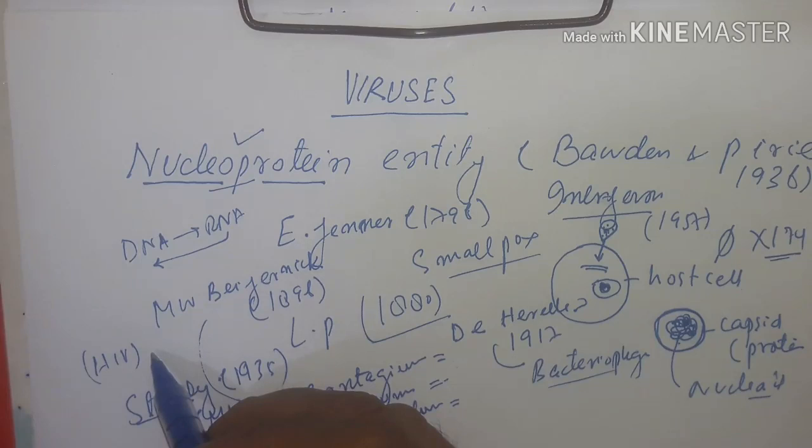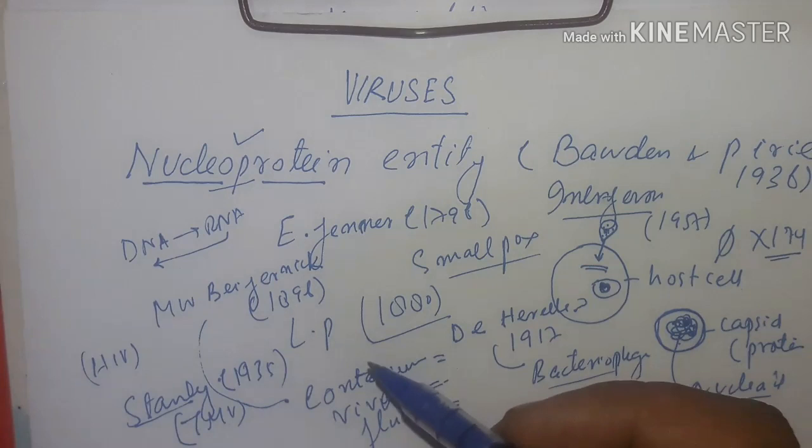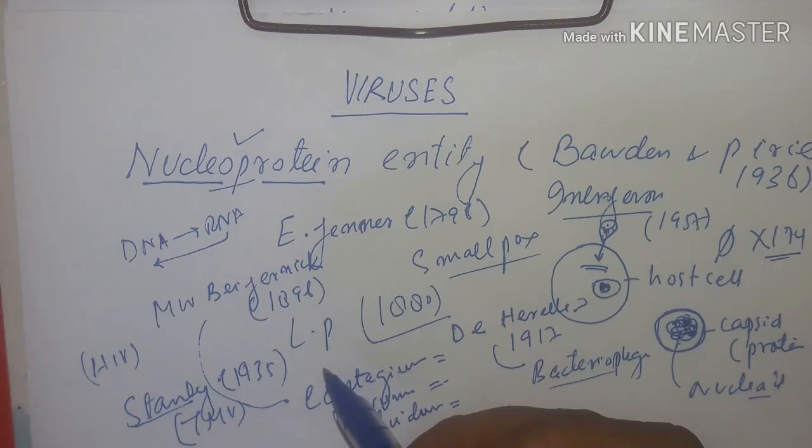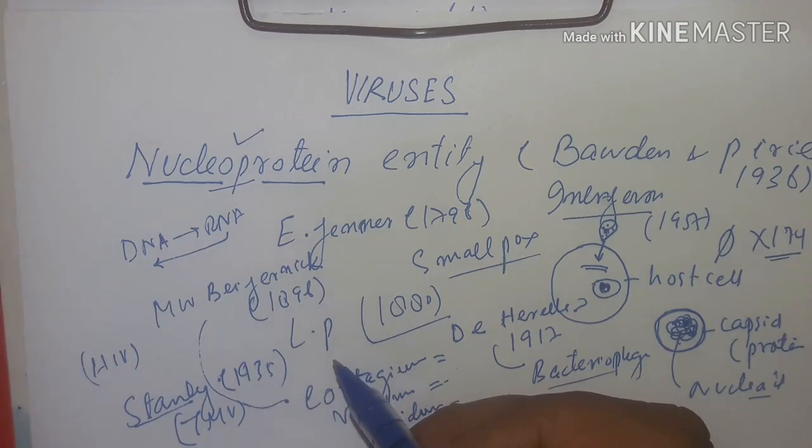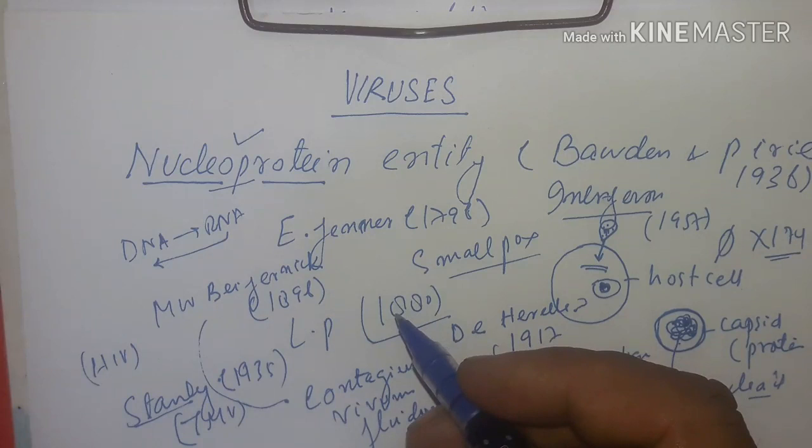Depending on the host, viruses can be classified as: bacteriophage infecting bacteria, coliphage infecting E. coli, cyanophage infecting blue-green algae, phycophage infecting algae, phytophage infecting plants, mycophage on fungi, and zoophage infecting animals.